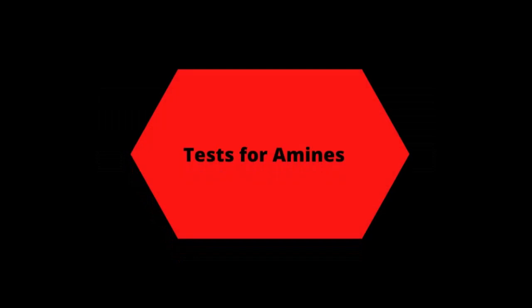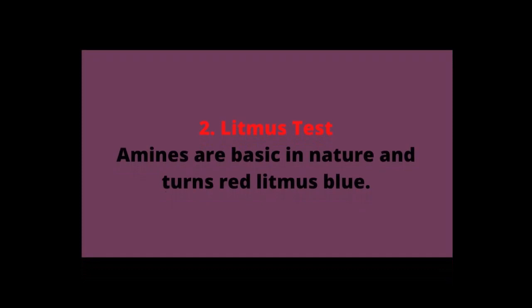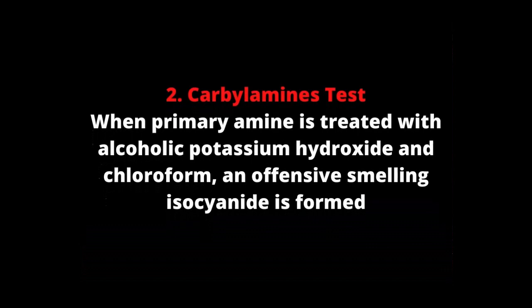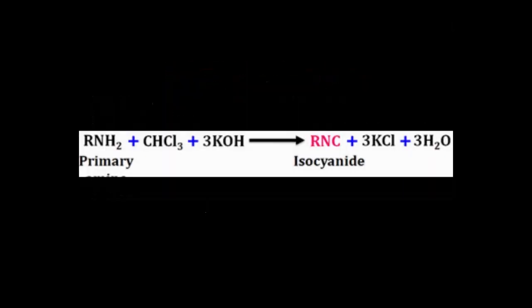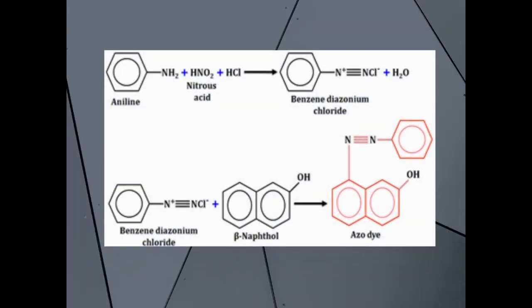Amines can be tested using the litmus test, where litmus paper changes from red to blue, indicating a basic nature. The carbylamine test is the most convenient test for amines — it gives isocyanide formation, which has a foul smell. The azo dye test can also be conducted for primary amines, which gives a yellow color precipitate.